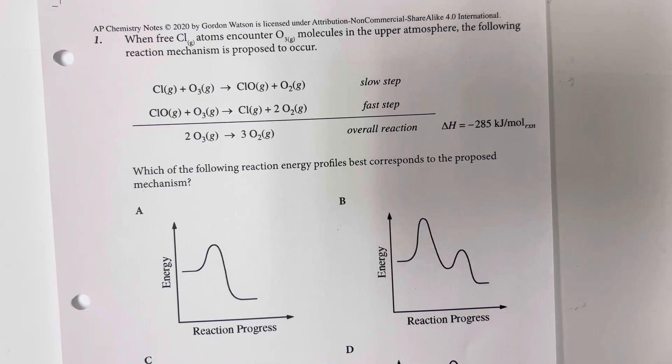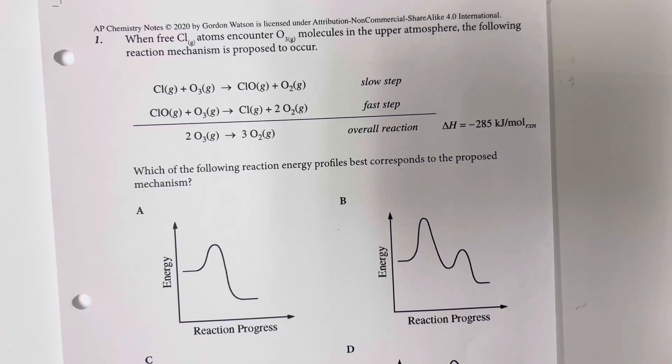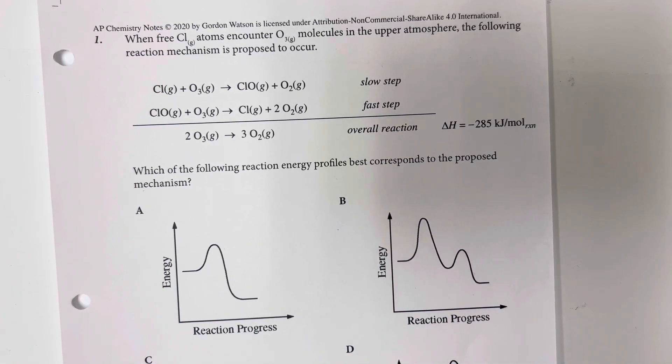5.10 practice problems. When free chlorine atoms encounter ozone molecules in the upper atmosphere, the following reaction mechanism is proposed to occur. Which of the following reaction energy profiles best corresponds with the proposed mechanism?